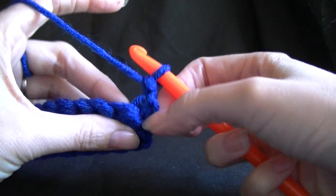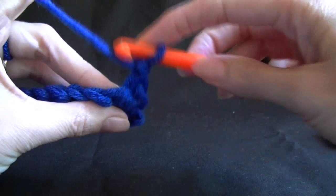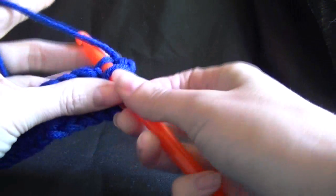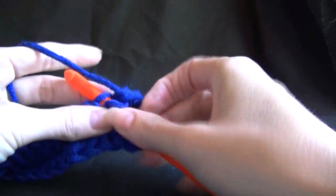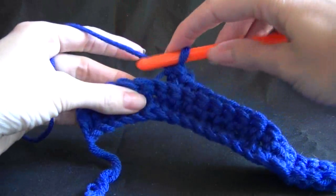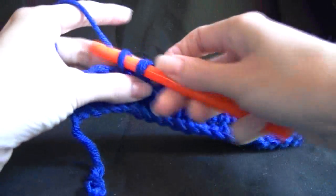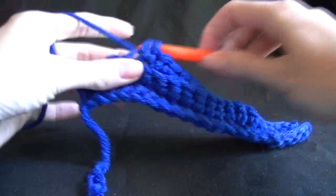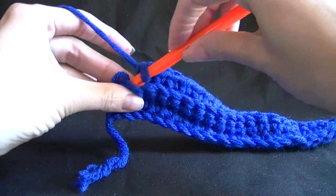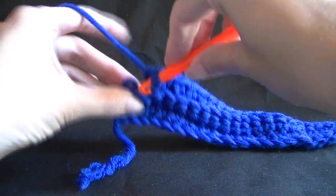So missing our first stitch, because we have done our chain 1, which counts as our first stitch. Going into the back loop and completing our stitch as normal. And we want to single crochet in every stitch across, and each row from now on is going to be exactly the same. So what we are just doing is making our piece wider.